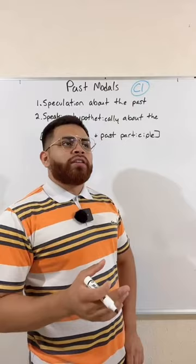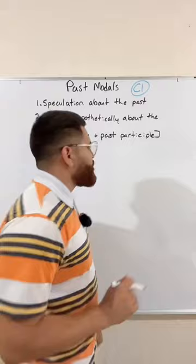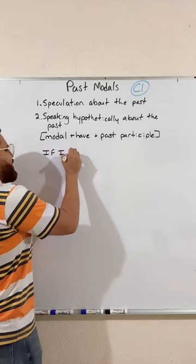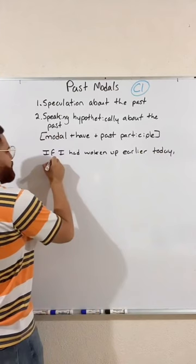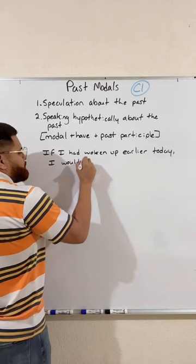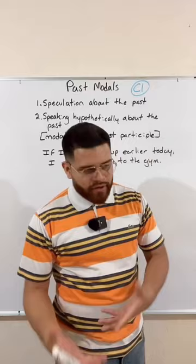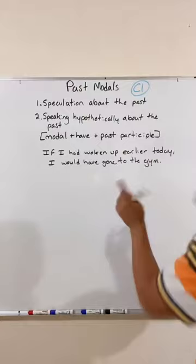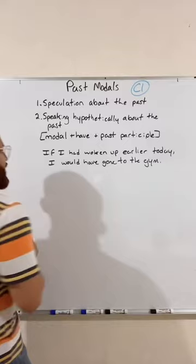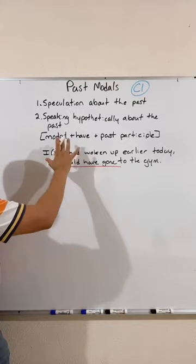Let me give you an example. This morning, I didn't go to the gym. I usually go to the gym on Friday mornings. Check this out — if I had woken up earlier today, I would have gone to the gym. Did I go to the gym? No. Did I wake up earlier? No. This is all hypothetical — I'm speaking hypothetically about the past. This did not happen. But notice I use the same structure as speculations.